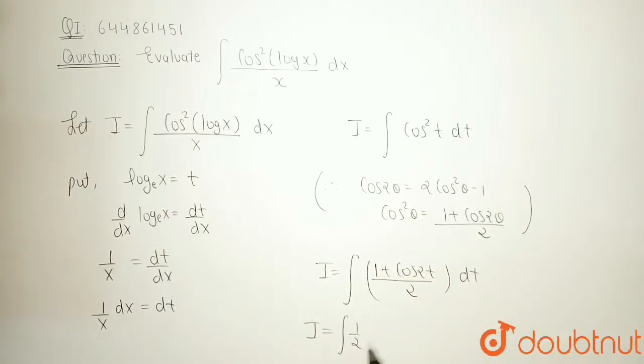Integration I becomes 1 by 2 dt plus 1 by 2 of integration of cos 2t dt. So, value of integration of 1 by 2 dt becomes t by 2 because the integration of constant becomes variable. Variable is t. So, it becomes t.